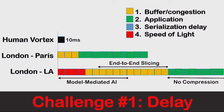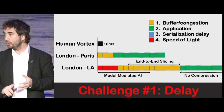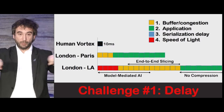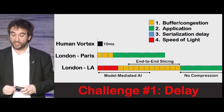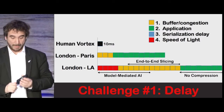What are the challenges? Delay is one of the biggest challenges. Delay is buffer congestion, application delay — meaning the encoding time it takes for the video — the serialization delay if you put two cabling technologies together, and speed of light.